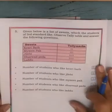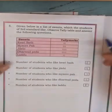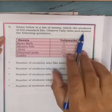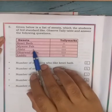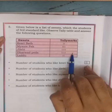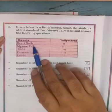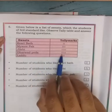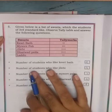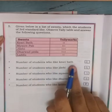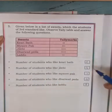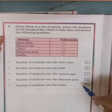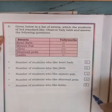The fifth question: given below is a list of sweets which the students of the standard like. Observe the tally table and answer the following questions. The number of students who like Kesri bath is 2, and the number of students who like the next sweet is 3.